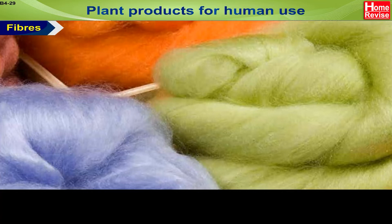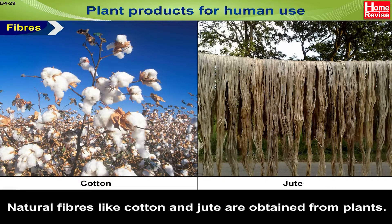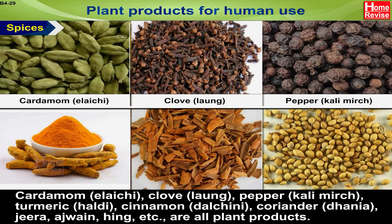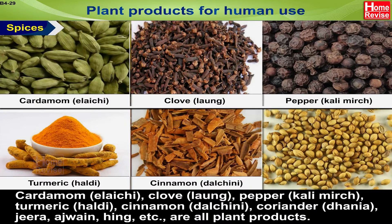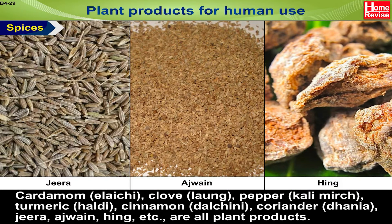Fibers: Natural Fibers like Cotton and Jute are obtained from Plants. Spices: Cardamom (Elaichi), Clove (Long), Pepper (Kali Mirch), Turmeric (Haldi), Cinnamon (Dalchini), Coriander (Dhania), Jeera, Ajwain, Hing, etc. are all plant products.